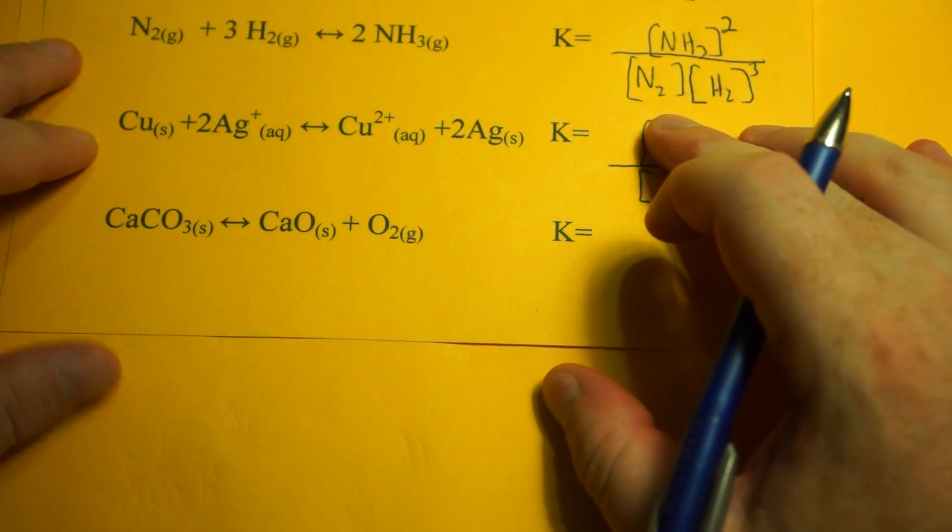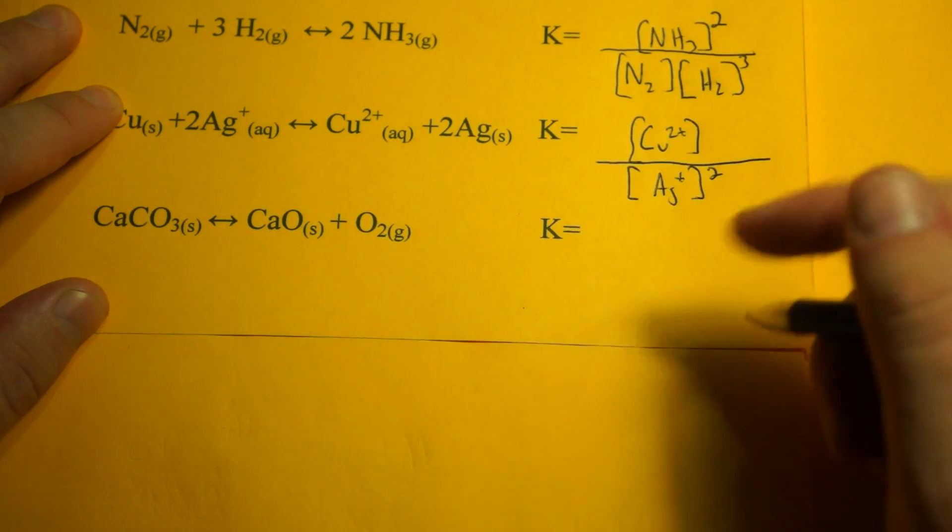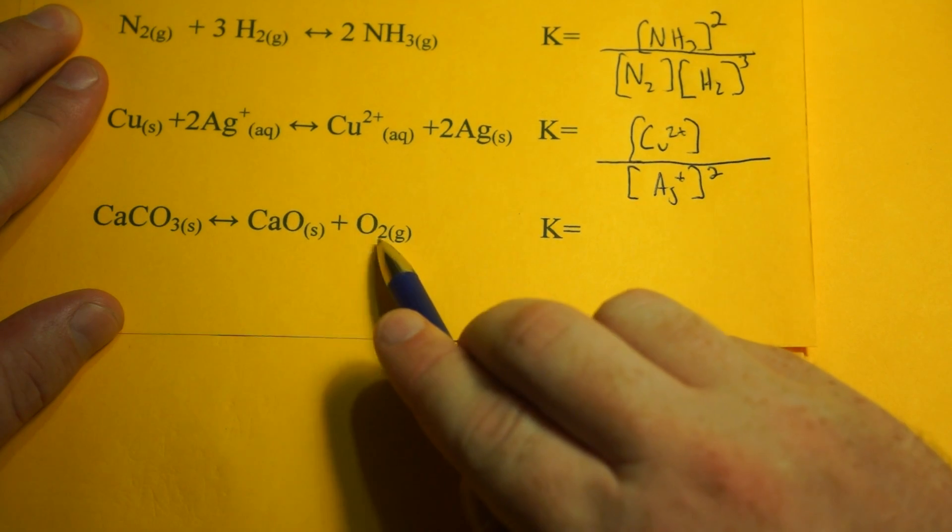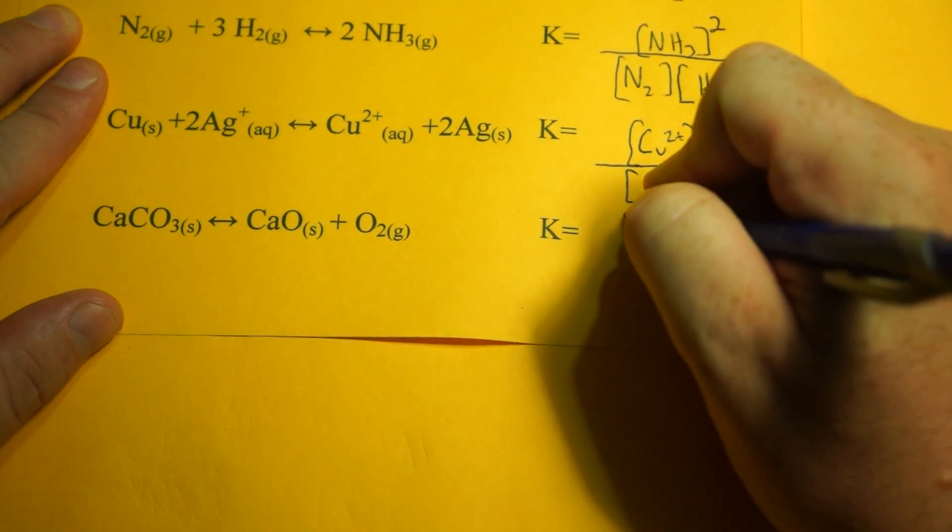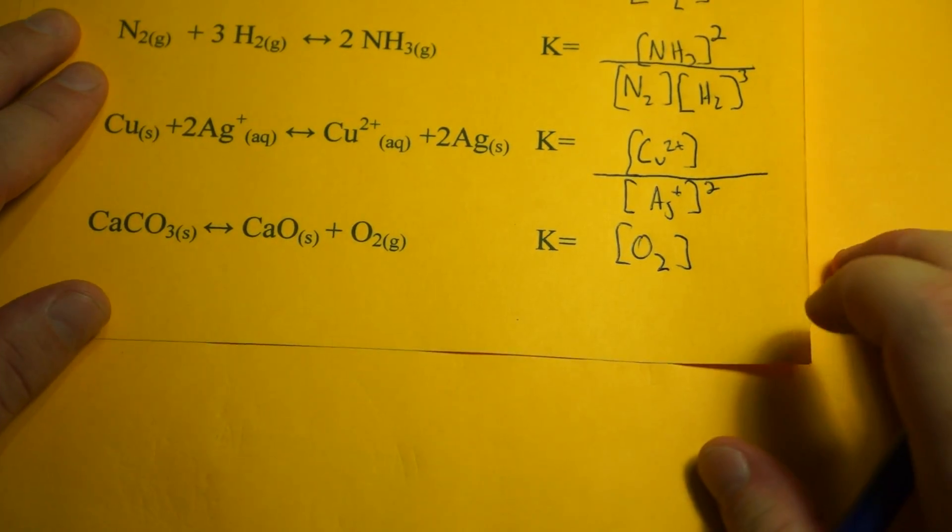Then we have the decomposition of calcium carbonate to calcium oxide and oxygen. Look at this: solid, solid, gas. So the only one we worry about for this equilibrium expression is O2. We put that in brackets to the first power, and that's it. K equals the concentration of O2.